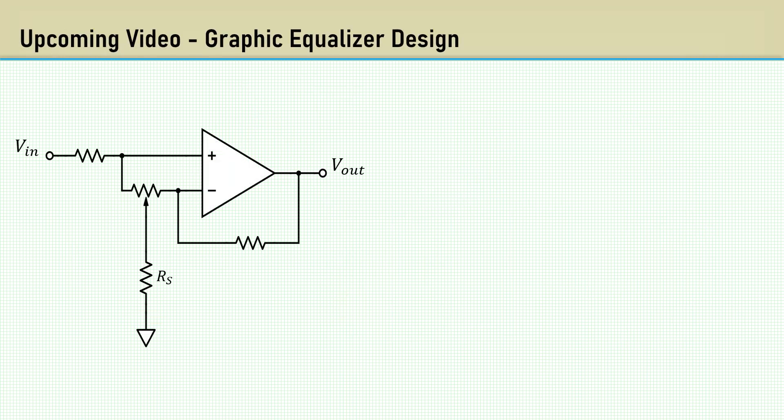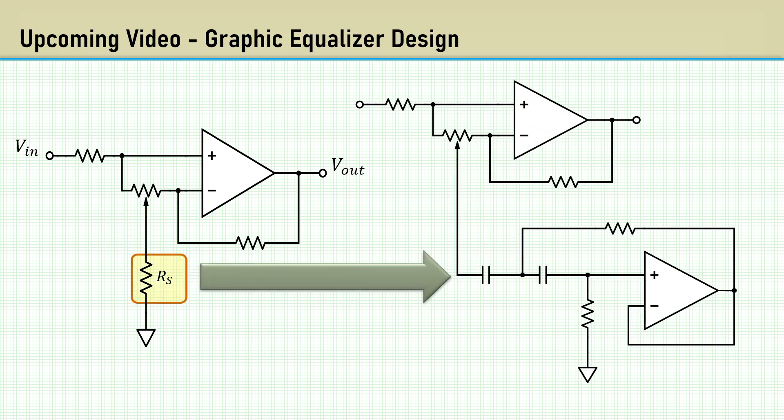In an upcoming video, we will look at a graphic equalizer design using this cut and boost circuit. The resistor RS will be replaced by reactive components, a capacitor and an inductor made by an op-amp gyrator, which we had a previous video called the op-amp gyrator demystified. The gyrator contains a series resistance that will replace RS. This gives us a series RLC circuit for a frequency-sensitive cut and boost.